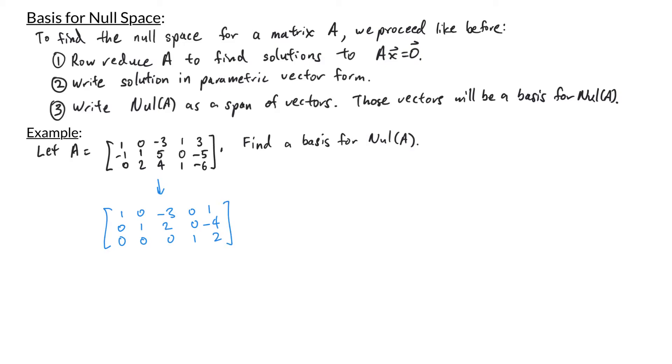Once it's in reduced row echelon form, you're ready to write your solution in parametric vector form. First, we see that we have three basic variables, x1, x2, and x4 are basic. And we have two free variables, x3 and x5.